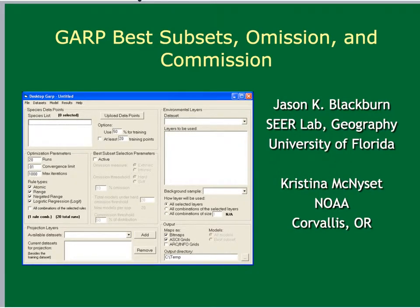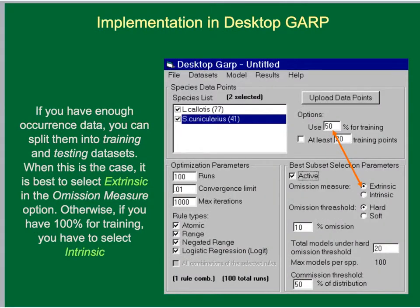In this video, we're going to discuss the desktop GARP modeling environment and how the GARP best subsets procedure is populated, and how those parameters relate to measures of omission — also known as false negatives — and commission, also defined as false positives. This is a presentation I've been working on with my colleague Christina McNeese. If you're interested in learning more about omission and commission and how those are important in selecting best models, check out the other videos on the SEER Lab YouTube page.